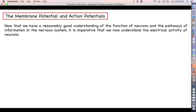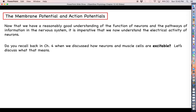Up until this point, we should feel reasonably good about our understanding of what neurons are and what they do in terms of sending long distance messages. But if we're really going to understand the circumstances under which a neuron will or will not fire one of those action potential messages, we need to understand the neuron's underlying electrical activity.